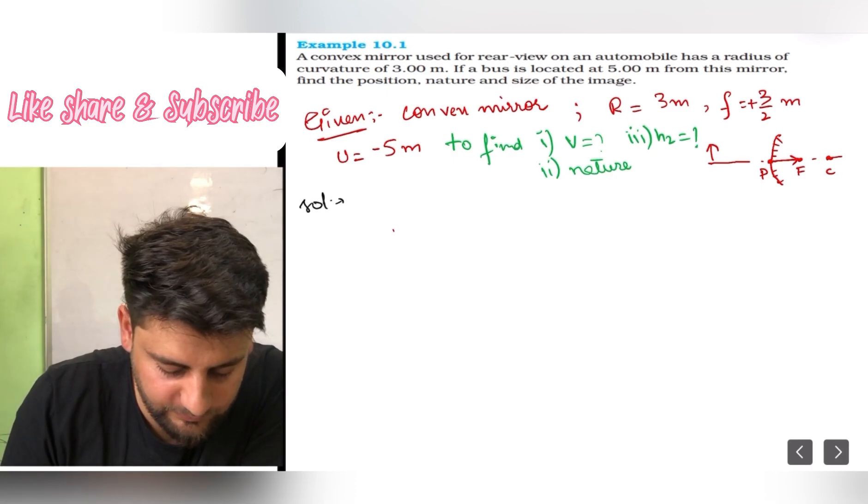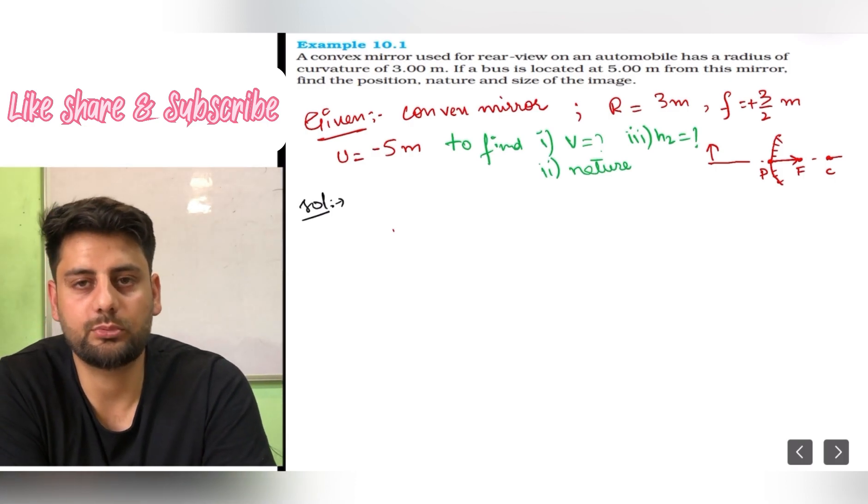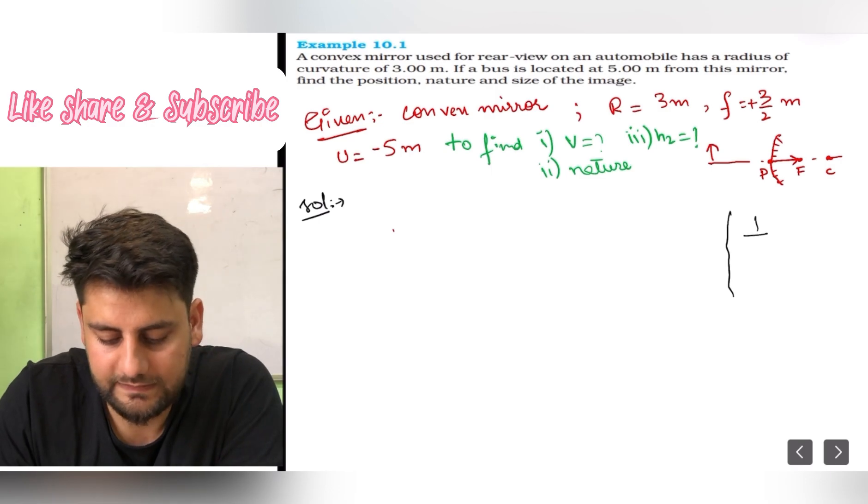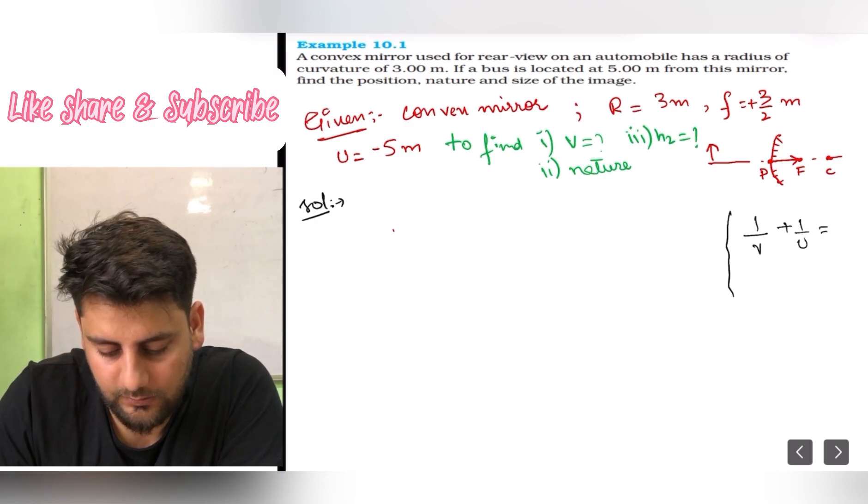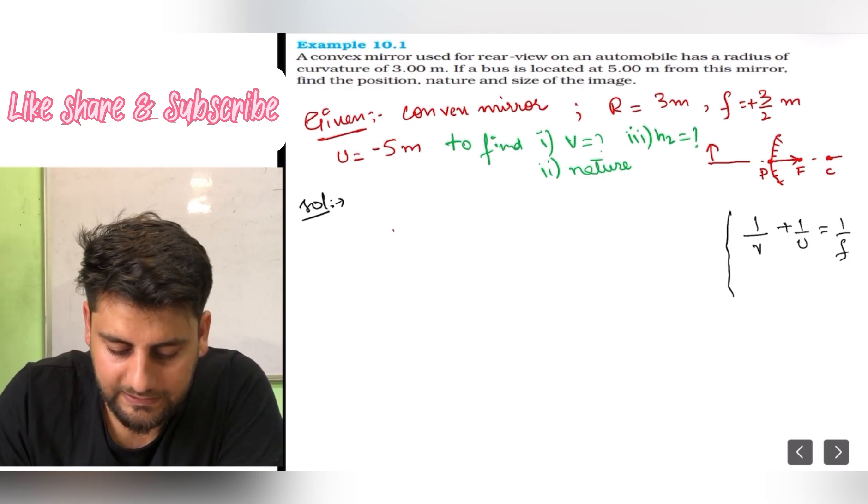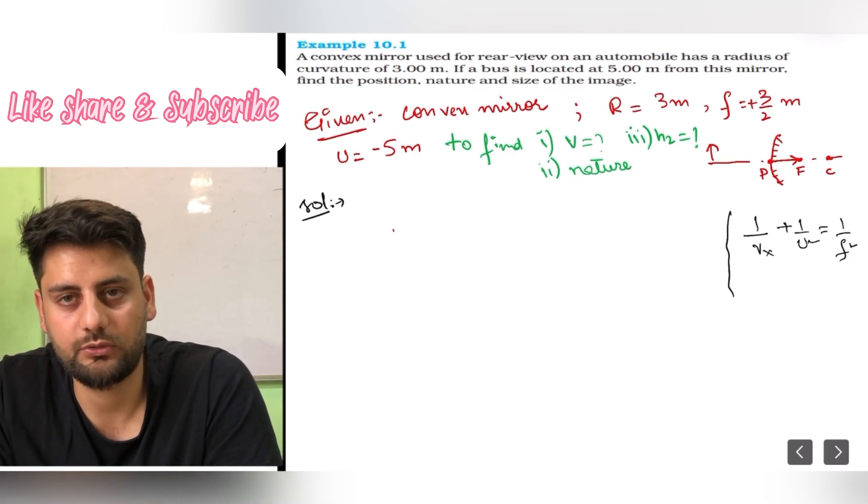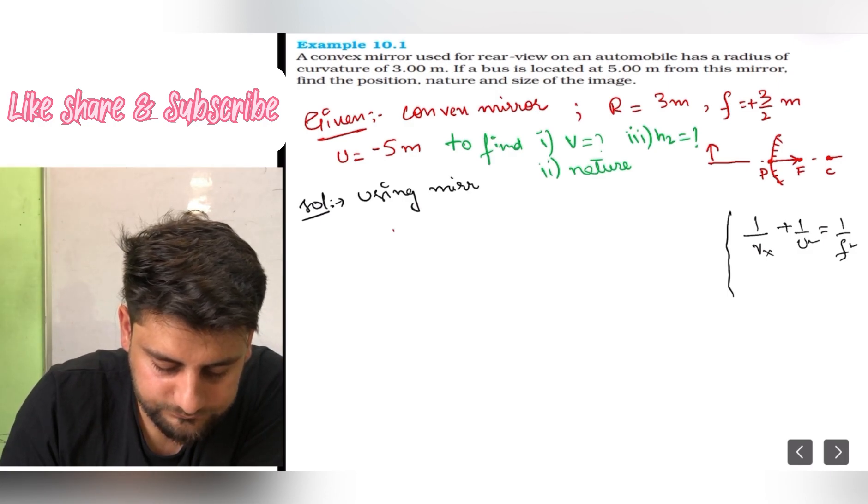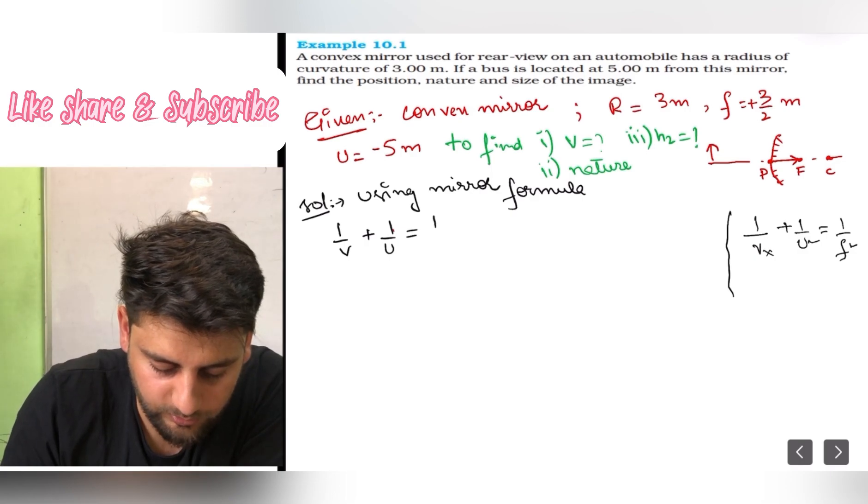Now in solution, we will use mirror formula. All formulas should be written in front. 1 by v plus 1 by u is equal to 1 upon f. Now I can clearly see that I have u given, I have f given, I don't have v. So only one unknown in one equation. So this equation is going to help me.